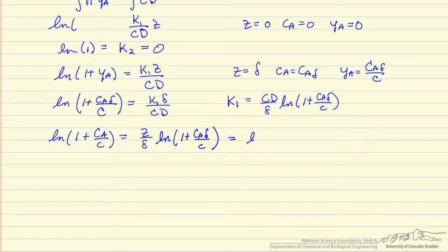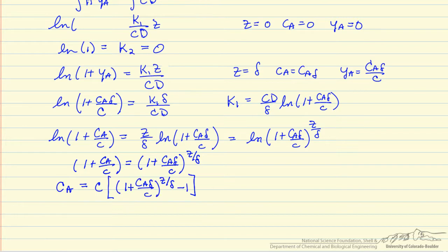I'm going to rewrite this. The reason I did that, because now I can take exponential of both sides, and now I can take just rearrange this equation and solve for the concentration of A in terms of Z and constant. And this was our original objective, is to determine the concentration as a function of Z.